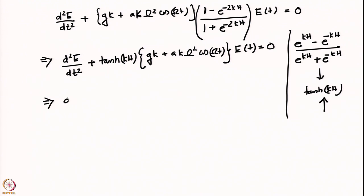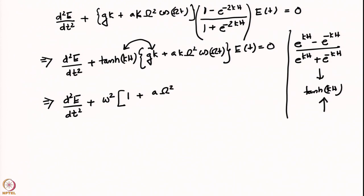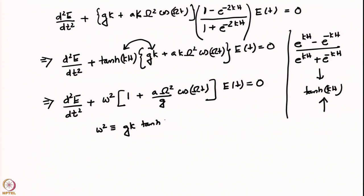Writing this in compact form: since gk·tanh(kh) is just the dispersion relation for free oscillations with no bottom vibration, we define omega² = gk·tanh(kh). The equation then becomes d²E/dt² plus omega²·[1 + (A·Omega²/g)·cos(Omega·t)]·E(t) = 0.